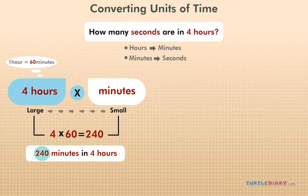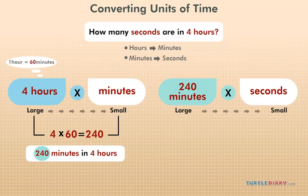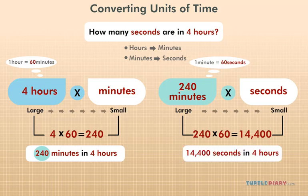Now we need to convert 240 minutes to seconds. Since minutes are larger than seconds, we're once again going from large to small, and we'll need to multiply. Since there are 60 seconds in a minute, we're once again multiplying by 60. 240 times 60 equals 14,400. There are 14,400 seconds in 4 hours.